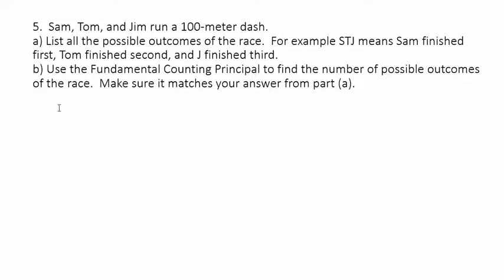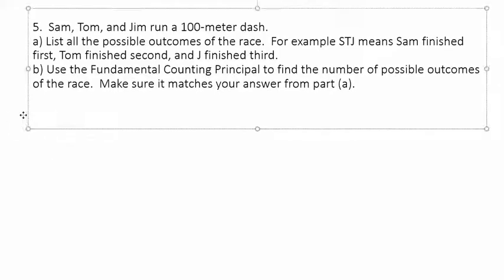Here's our next example. Sam, Tom, and Jim run a 100-meter dash. List all the possible outcomes of the race. For example, STJ means Sam finished first, Tom finished second, and Jim finished third. You could use a tree diagram for this again.